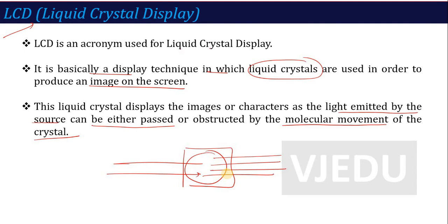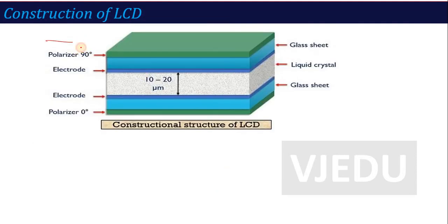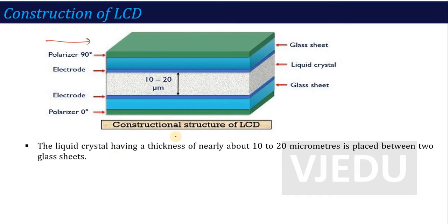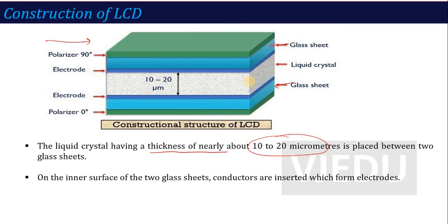Now, the structure of LCD — this is the construction of LCD. It consists of a liquid crystal having a thickness of nearly about 10 to 20 micrometers, placed between two glass sheets. To apply the voltage, on the inner surface of the two glass sheets, conductors are inserted. These conductors form your electrodes, where we apply the positive and negative voltage.